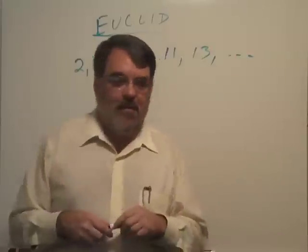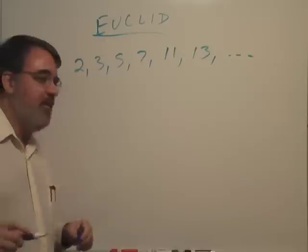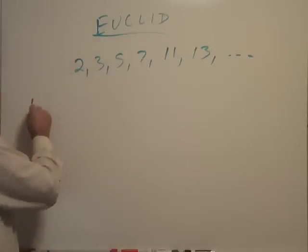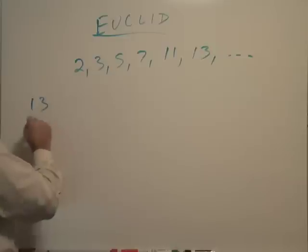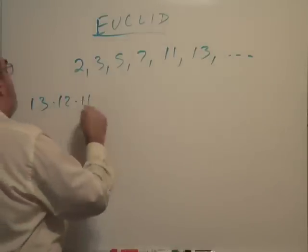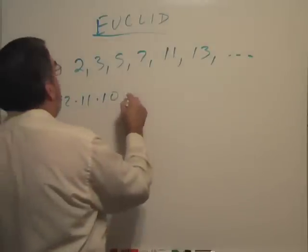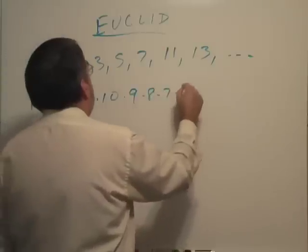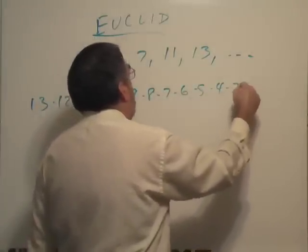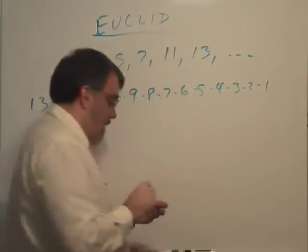So Euclid says, all right, suppose there's the largest prime number. Here's what I propose to do. I'm going to take this number and multiply it by all the previous numbers down to 1. So if we're using 13, 13 times 12 times 11 times 10 times 9 times 8, 7, 6, 5, 4, 3, 2, and 1.